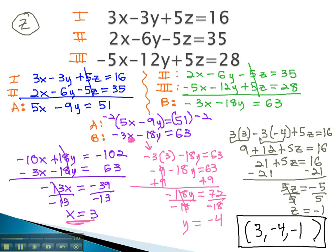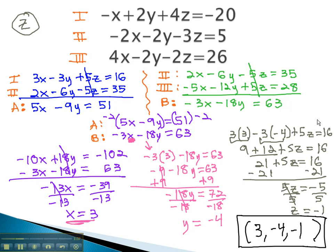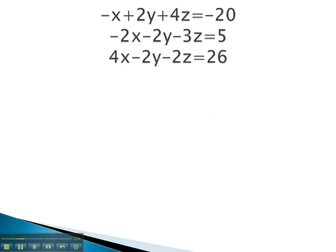Let's try another example with three equations, where we have to eliminate the same variable twice. Again, in this problem, we'll label them 1, 2, and 3, and look for a variable that's easy to eliminate.